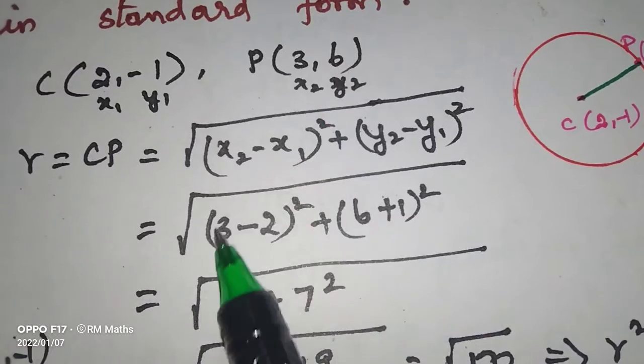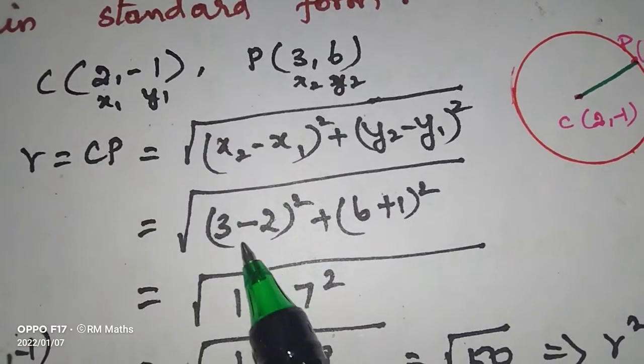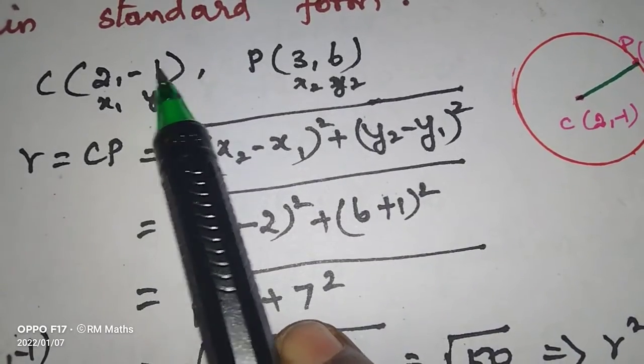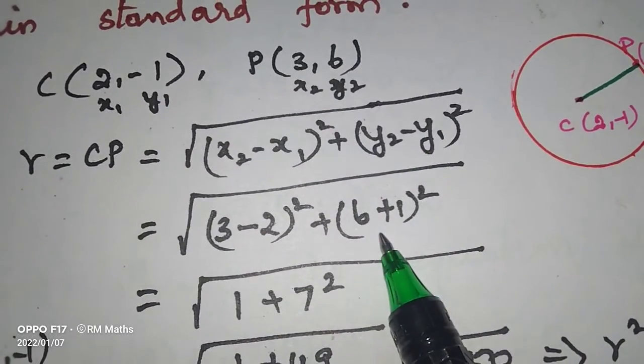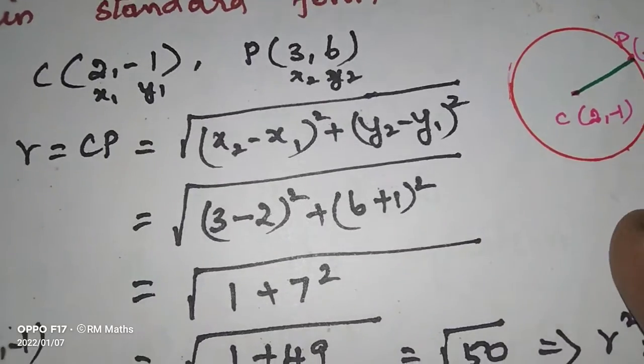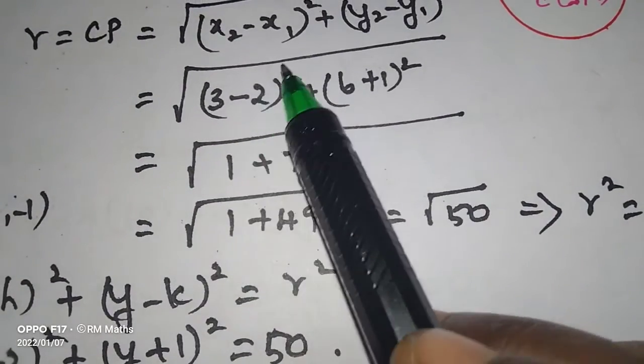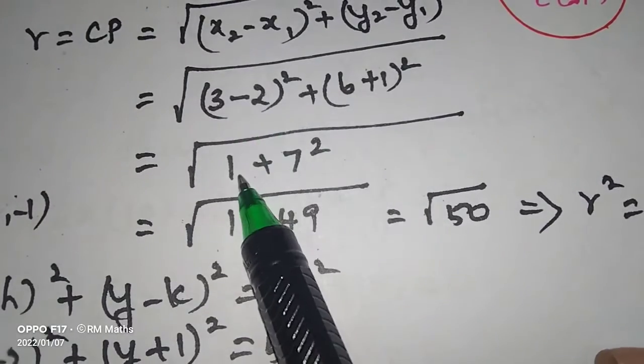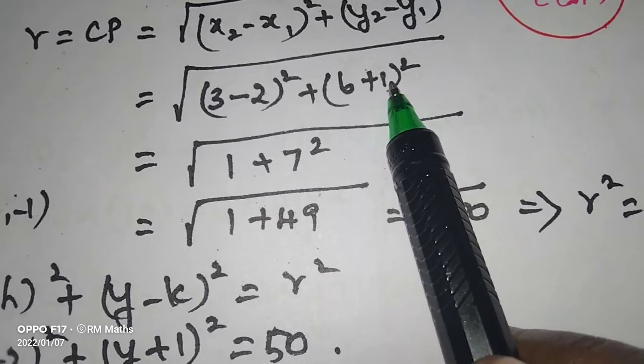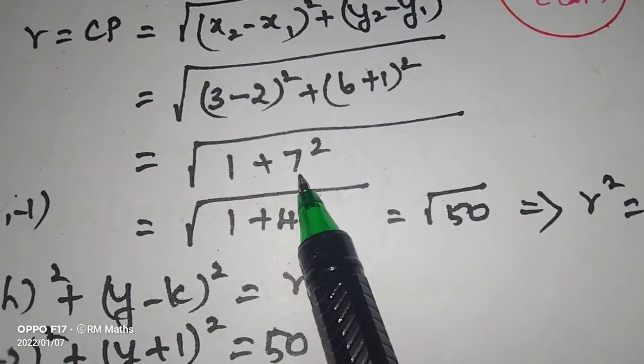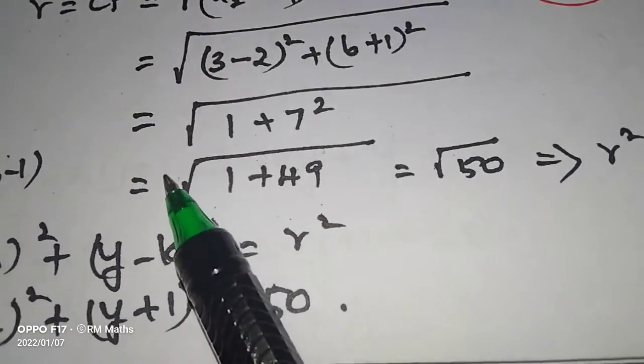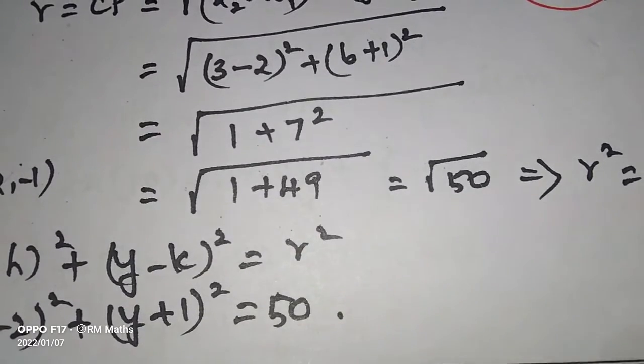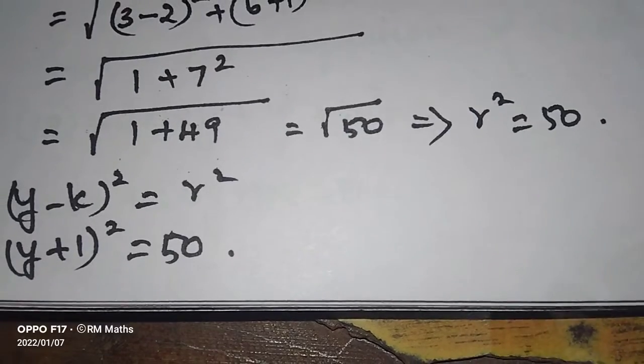x2 is equal to 3, x1 is equal to 2. So 3 minus 2 whole square. y2 is 6 minus minus 1, which is 6 plus 1 whole square. That equals 1 squared plus 7 squared, which is 1 plus 49, equals root of 50. So r squared is 50.